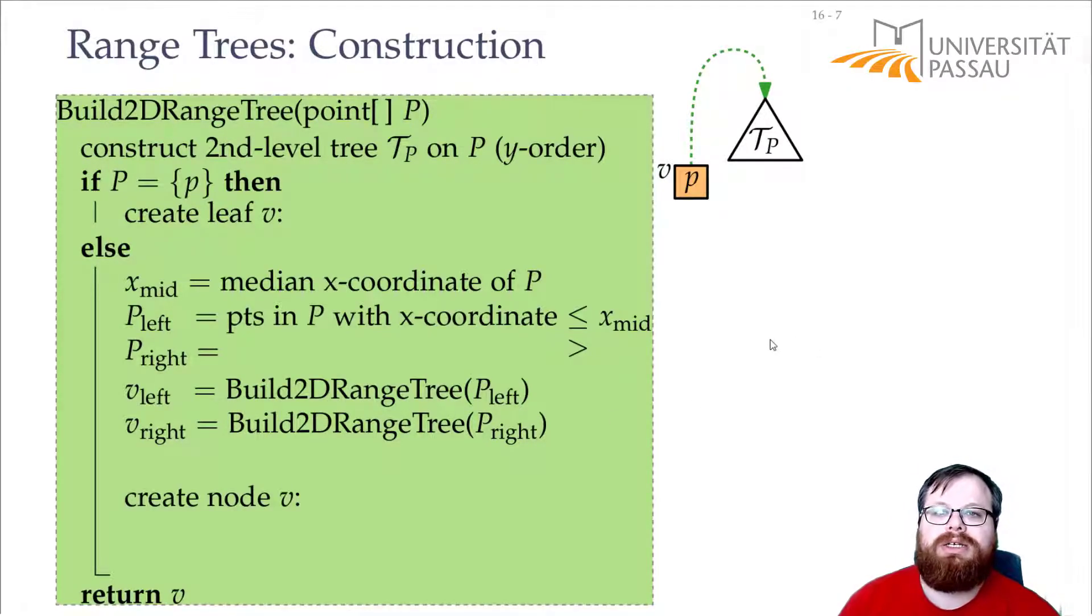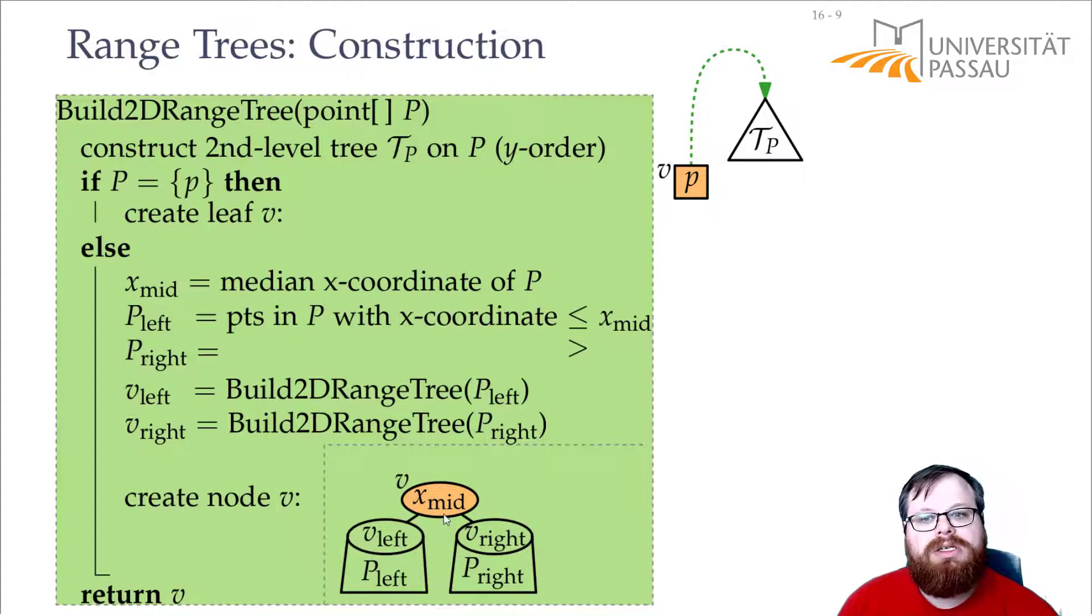Then we create an internal node that points to these two range trees that we find and also to an auxiliary tree that contains all the points inside here sorted by y-coordinate. That we build here. And that is the whole construction.